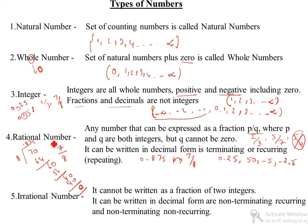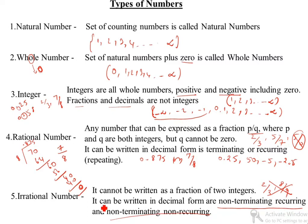What is an irrational number? It cannot be written as a fraction of two integers — you cannot write it as 2/3 or 8/9. It can be written in decimal form as non-terminating recurring or non-terminating non-recurring. Non-terminating recurring means, for example, 1/3 gives 0.3333... where 3 keeps repeating. Similarly, 0.2727... is repeating or recurring, so it is non-terminating recurring.